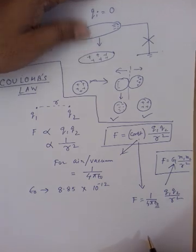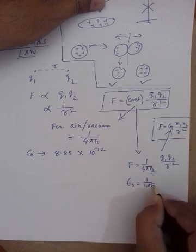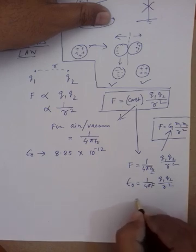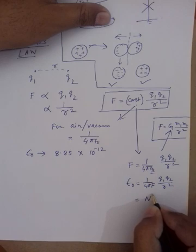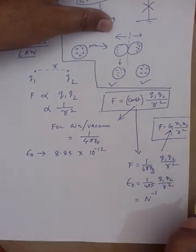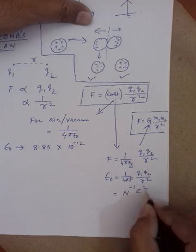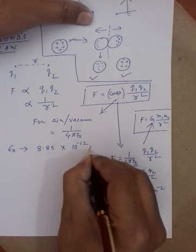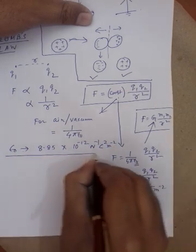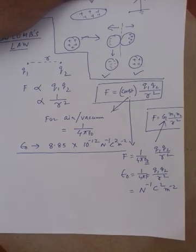Rearranging, ε₀ = q1·q2 / (4π·F·r²). Since 4π is dimensionless, force has unit Newton, charges have unit Coulomb, and distance has unit meter, the unit of ε₀ works out to N⁻¹·C²·m⁻². This is the unit of ε₀, the absolute permittivity. Now with this known, we can calculate the force between two point charges.